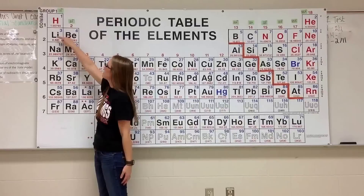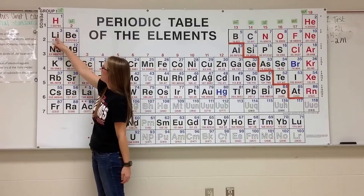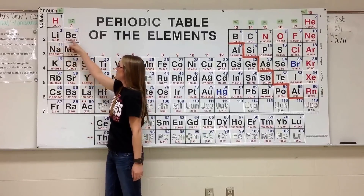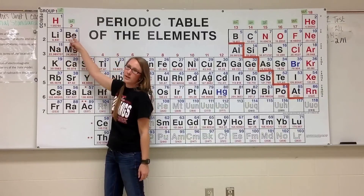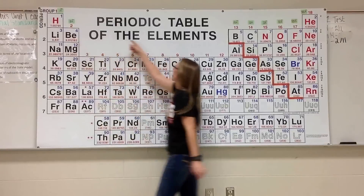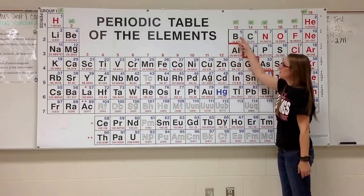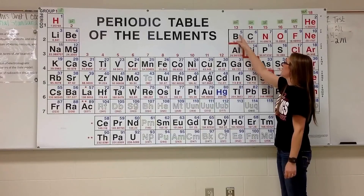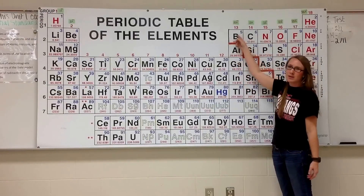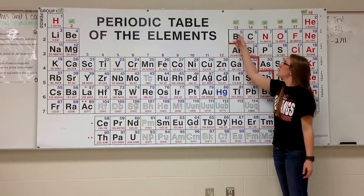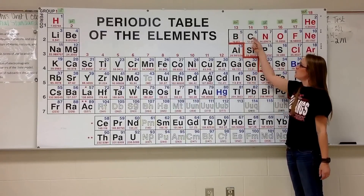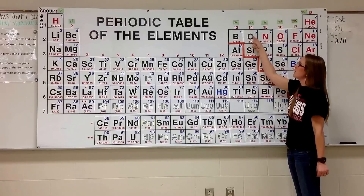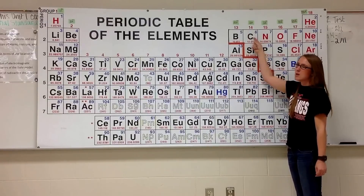Lithium is 2s1 — second energy level, S orbital, one electron. Beryllium would be 2s2 — second energy level, S orbital, 2 electrons. Moving across to boron, we have 2p1: 2 for the second energy level, P because it is in the P block, 1 because it is the first electron in the P orbital. Carbon would be 2p2 — second energy level, P block, second electron in the P orbital.